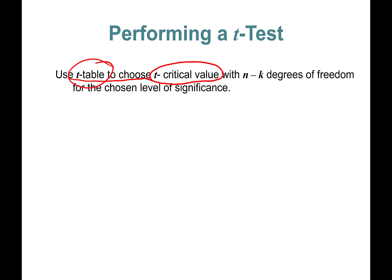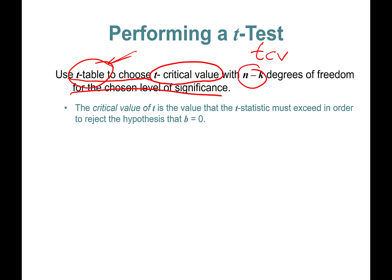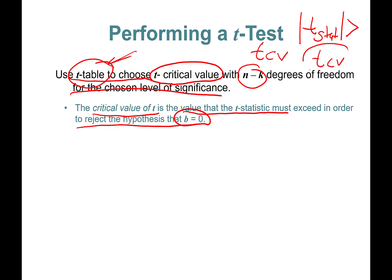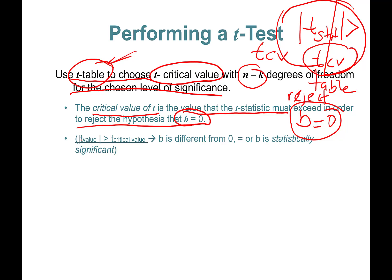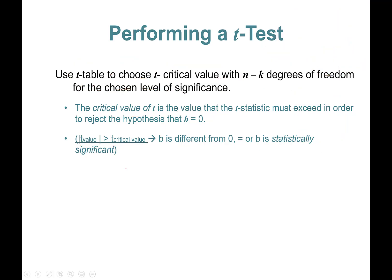Use the t-table to choose the t-critical value with n minus k degrees of freedom for the chosen level of significance. The critical value of t is the value that the t-statistic must exceed in order to reject the hypothesis that b is zero. If the absolute value of the t-value is strictly greater than the t-critical value, we can say b is statistically significant.